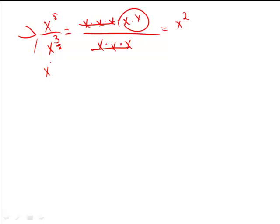Now, what happens if I have x cubed over x to the fifth? Well, same rules apply. Three minus five is negative two. So this gives me x to the negative two power.